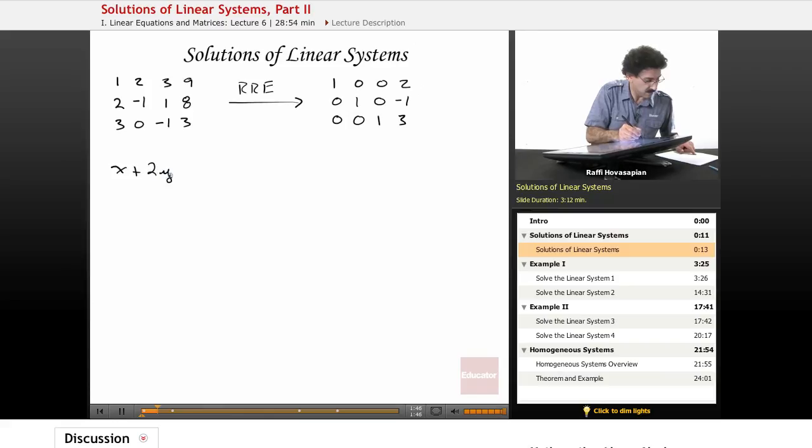x plus 2y plus 3z equals 9. And then 2x minus y plus z equals 8.